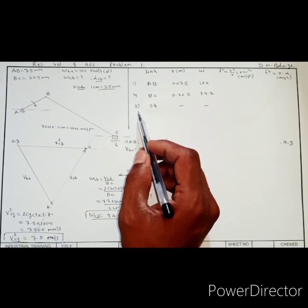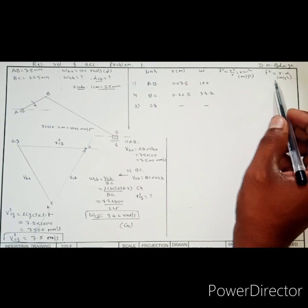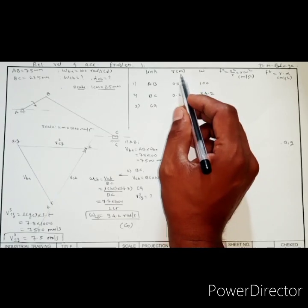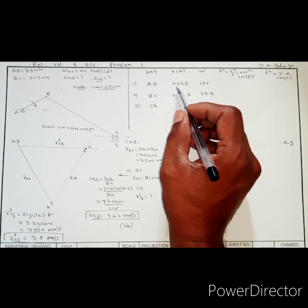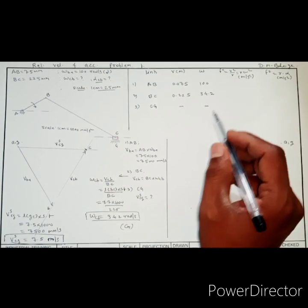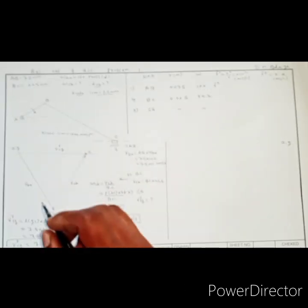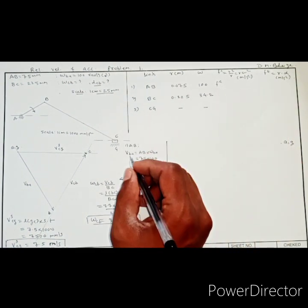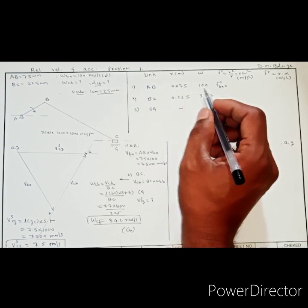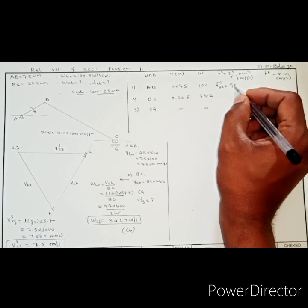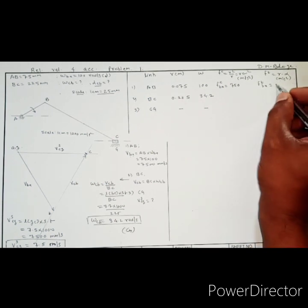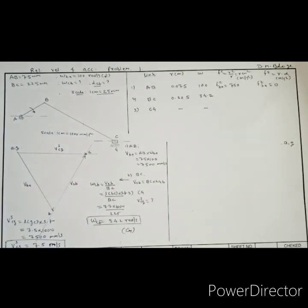First of all we will make a table to find out the values of centripetal and tangential accelerations. For link AB, we take the radius of rotation as the length of link, which is 0.075 meters. Its angular velocity is given as 100 radians per second. So the centripetal component of B relative to A equals R into omega squared: 0.075 into 100 squared, which gives 750 meters per second squared. The tangential component of B relative to A is zero because alpha BA is not given, so we assume link AB rotates with uniform speed.